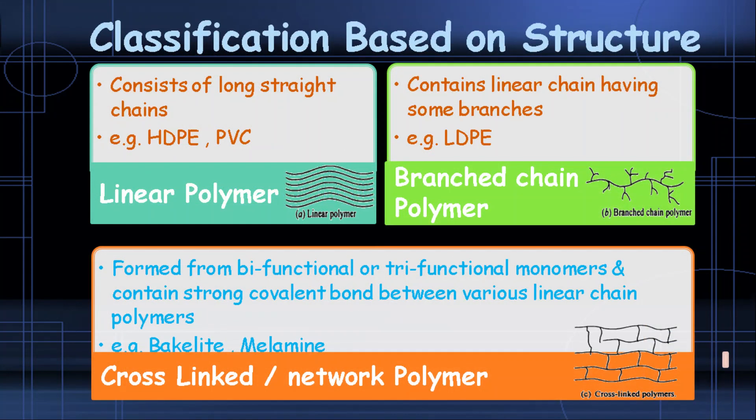Based on structure, polymers are defined into three types: linear, branched, and crosslinked. A linear polymer is a long chain consisting of the same monomers. A branched chain polymer contains a linear chain with some branches. Crosslinked polymers contain bifunctional or polyfunctional monomers.